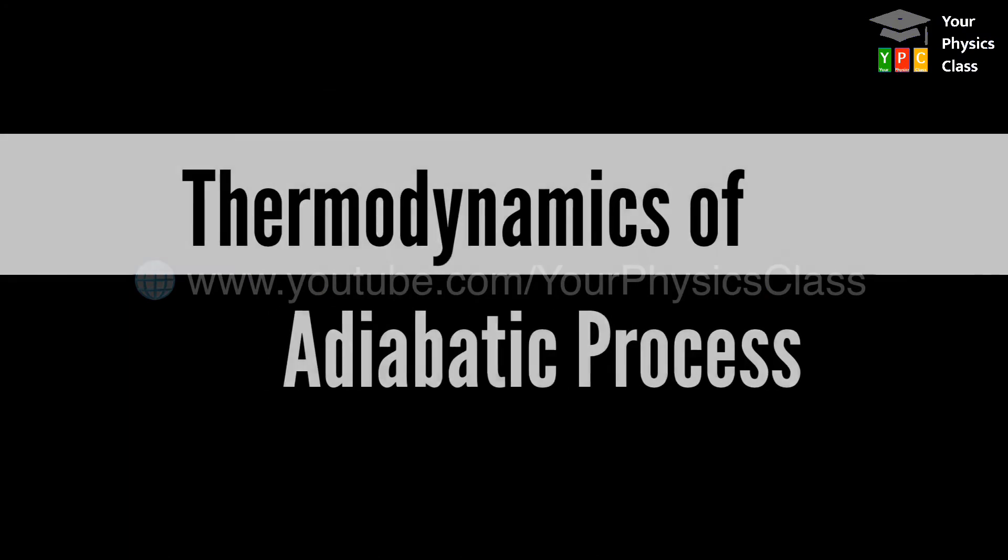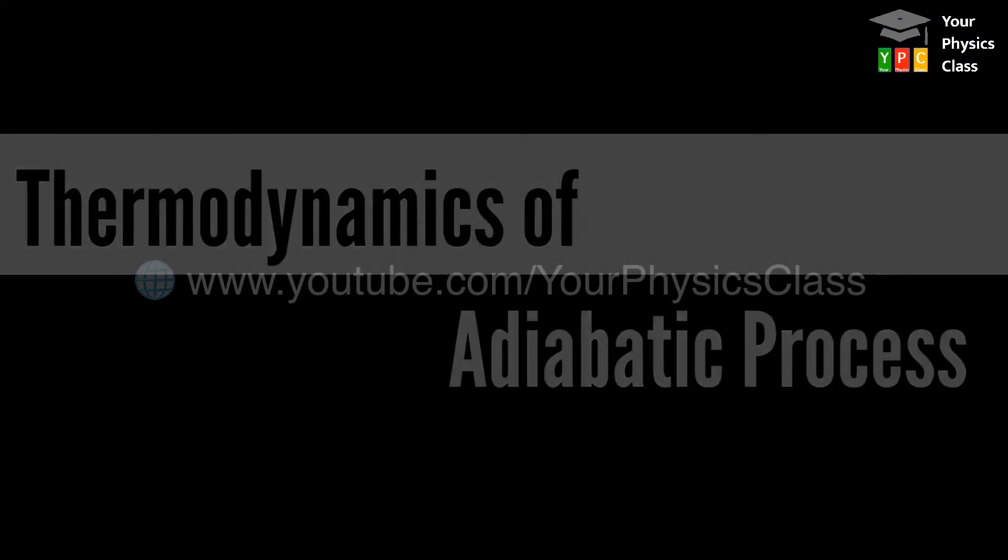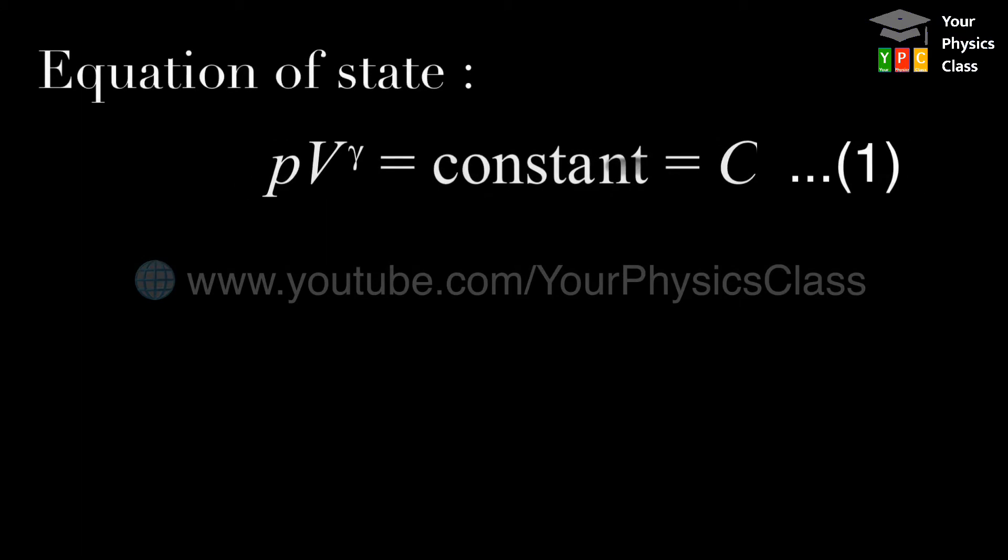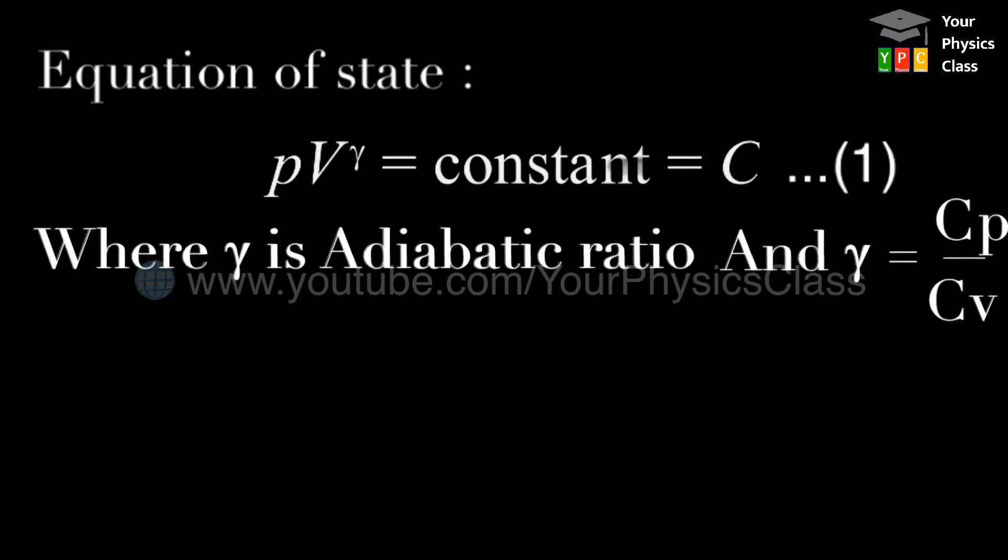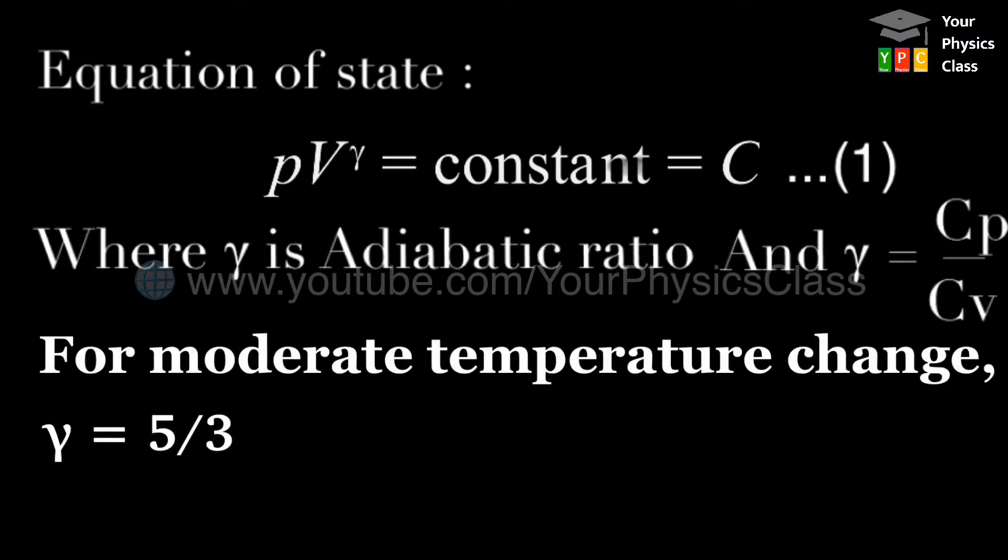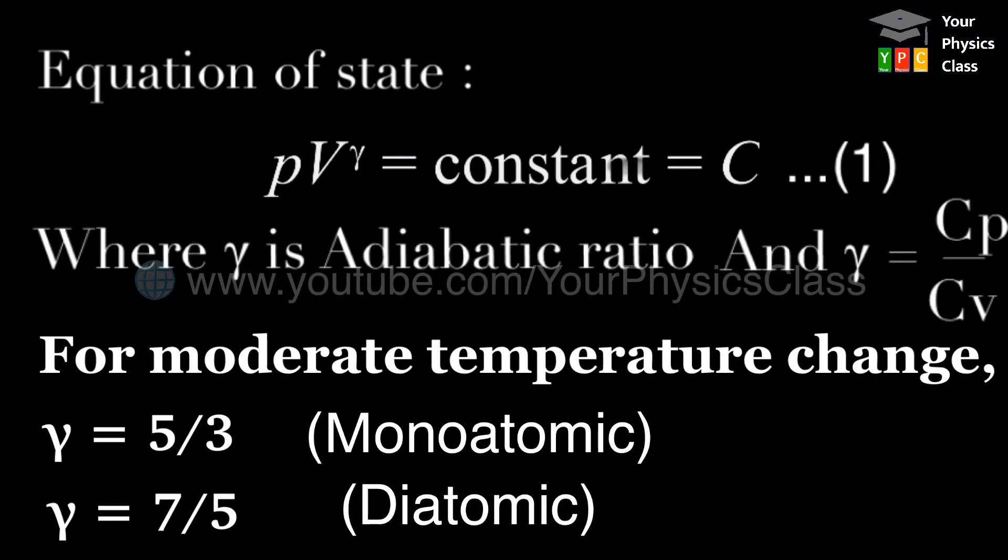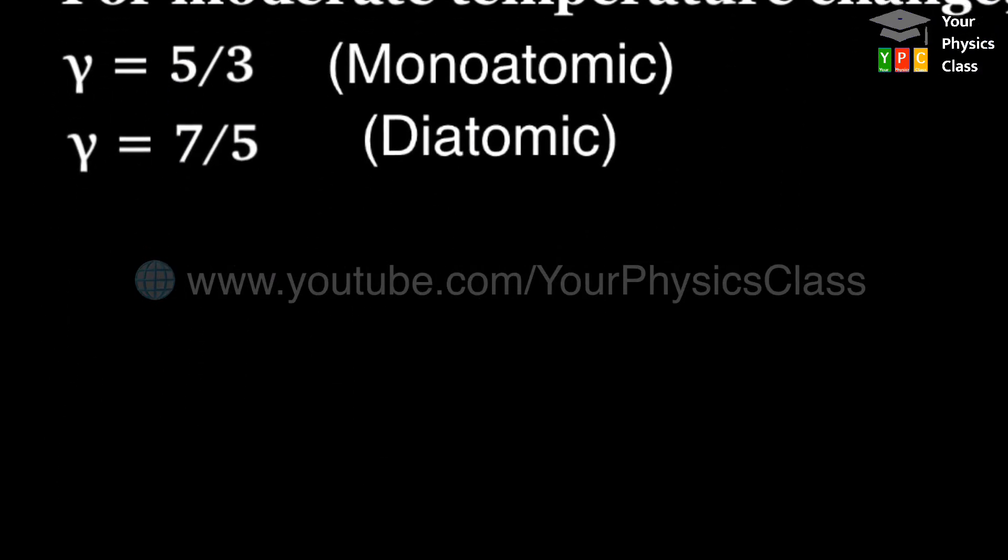Let us now see the thermodynamics of adiabatic process. For adiabatic process, we have PV to the power gamma equals constant. This gamma is nothing but adiabatic ratio, which is equal to the ratio of specific heats at constant pressure to specific heat at constant volume. For moderate temperature changes, the value of gamma is 5 by 3 for monoatomic gases, 7 by 5 for diatomic gases, and 4 by 3 for polyatomic gases.